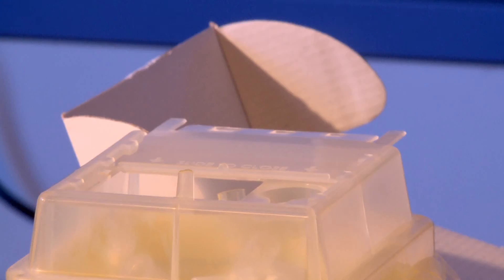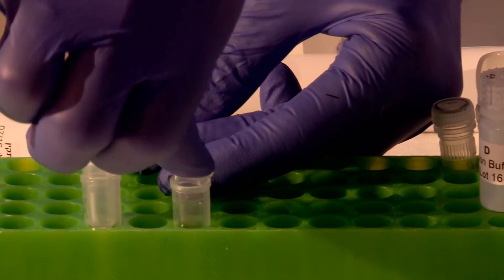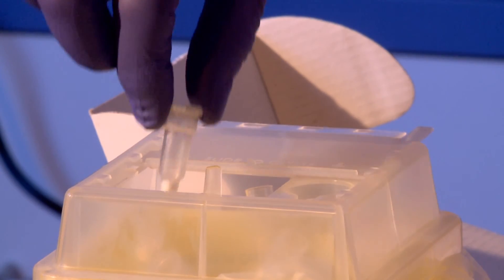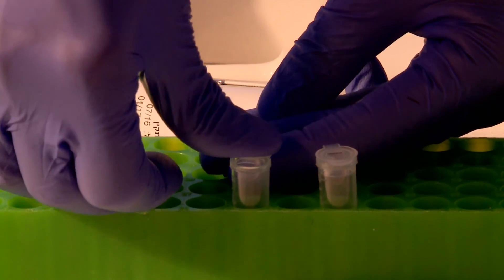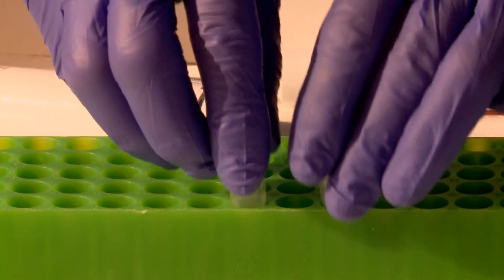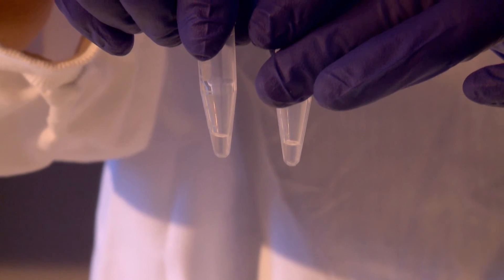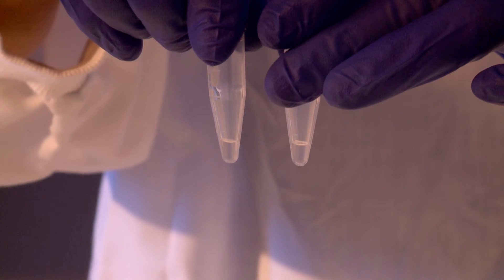Discard the spin column and close the lid of the 1.5 milliliter tube and label it with a sample code. This extracted DNA will be used for the PCRun reactions. If not used immediately, you can store the DNA for short periods of time in the refrigerator or for longer periods in the freezer.